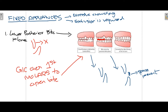The first fixed appliance is the lower posterior bite plane. In this scenario, the mandibular incisor overlaps with the maxillary incisor, creating a locked bite where the maxillary incisor cannot move labially because it hits the mandibular incisor. We place a lower posterior bite plane to create space so the maxillary incisor can now move in a labial direction. After some weeks and months, normal occlusion is achieved, eliminating the crossbite.